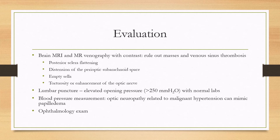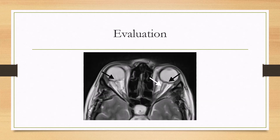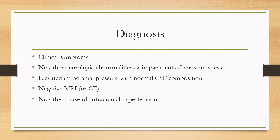An ophthalmology consult is required as well. Here is an example showing flattening of the posterior sclera, which is probably the most common MRI finding. In terms of the diagnosis: if you have the clinical symptoms, no other neurologic abnormalities or impairment of consciousness, elevated intracranial pressure on lumbar puncture with normal CSF composition, negative head imaging on MRI or CT, and no identifiable other causes of intracranial hypertension, then the diagnosis of IIH is made.